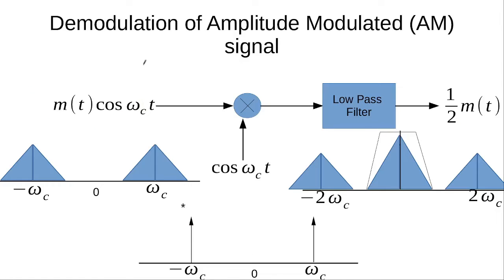We can also visualize the demodulation operation of the amplitude modulated signal in the frequency domain. This multiplication operation is again translated into a convolution operation. This is our amplitude modulated signal, and this is the Fourier transform of the carrier signal.